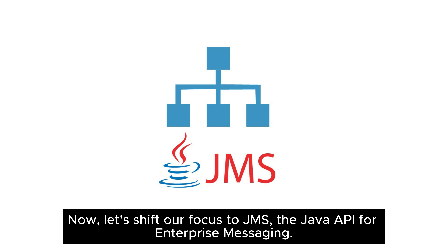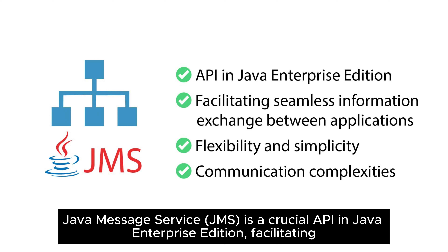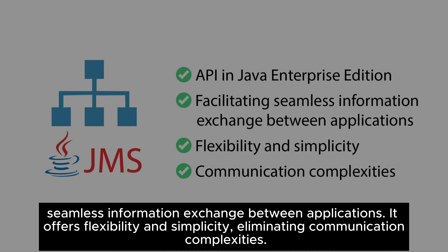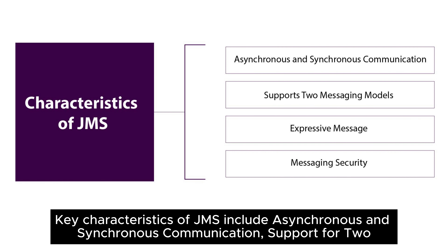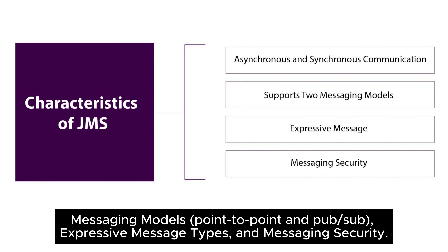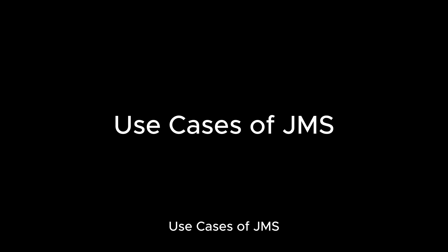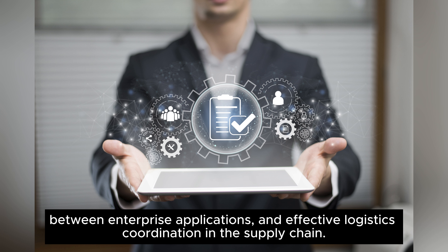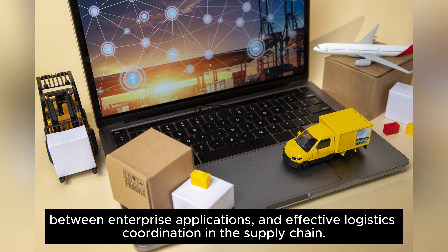Now let's shift our focus to JMS, the Java API for Enterprise Messaging. Java Message Service (JMS) is a crucial API in Java Enterprise Edition, facilitating seamless information exchange between applications. It offers flexibility and simplicity, eliminating communication complexities. Key characteristics of JMS include asynchronous and synchronous communication, support for two messaging models — point-to-point and pub/sub — expressive message types, and messaging security. JMS finds its applications in e-commerce for order processing, seamless data exchange between enterprise applications, and effective logistics coordination in the supply chain.